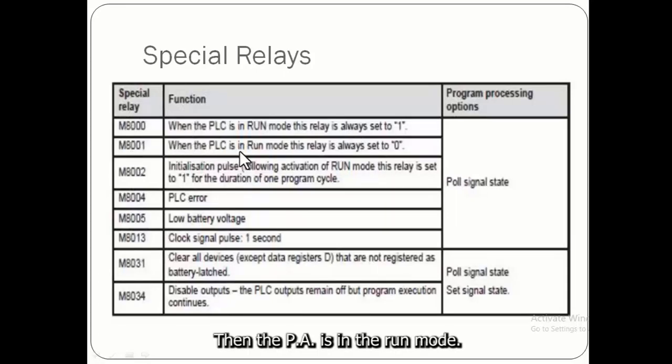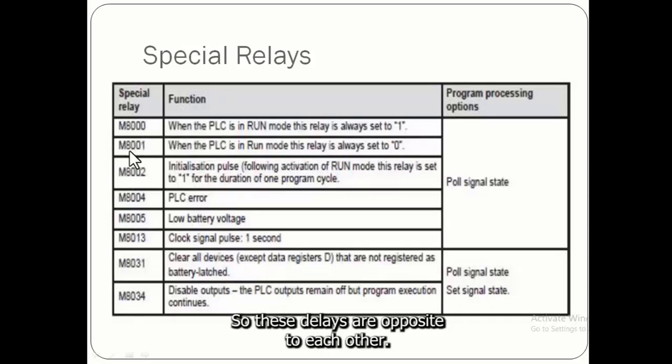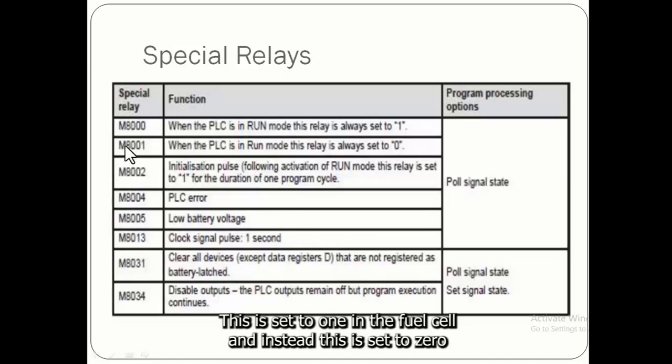M8001, when the PLC is in run mode this relay is always set to 0. So these relays are opposite to each other. This is set to 1 in the PLC running state, this is set to 0.